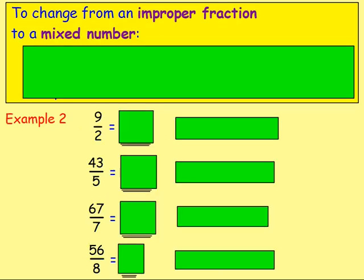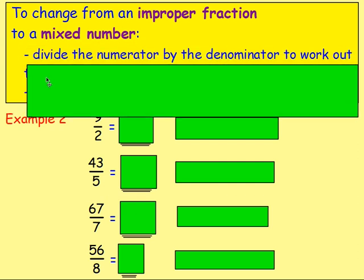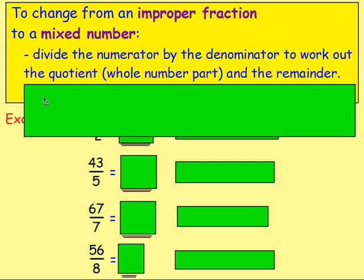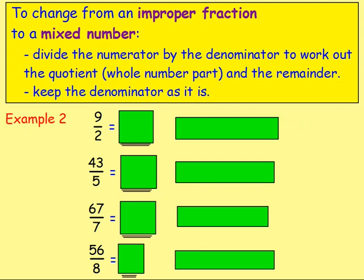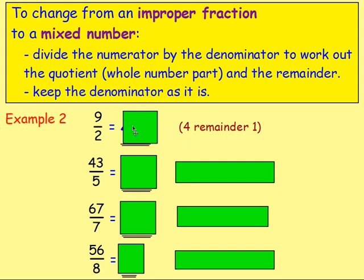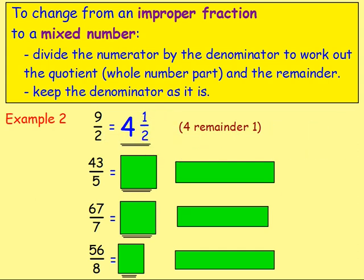Now let's go the other way: changing from an improper fraction to a mixed number. If you have nine over two — nine half pizzas — divide the numerator by the denominator and find the quotient and remainder. Nine divided by two gives four remainder one. The four becomes the whole number, the remainder one becomes the numerator, and the denominator stays as two — so nine over two is the same as four and a half.